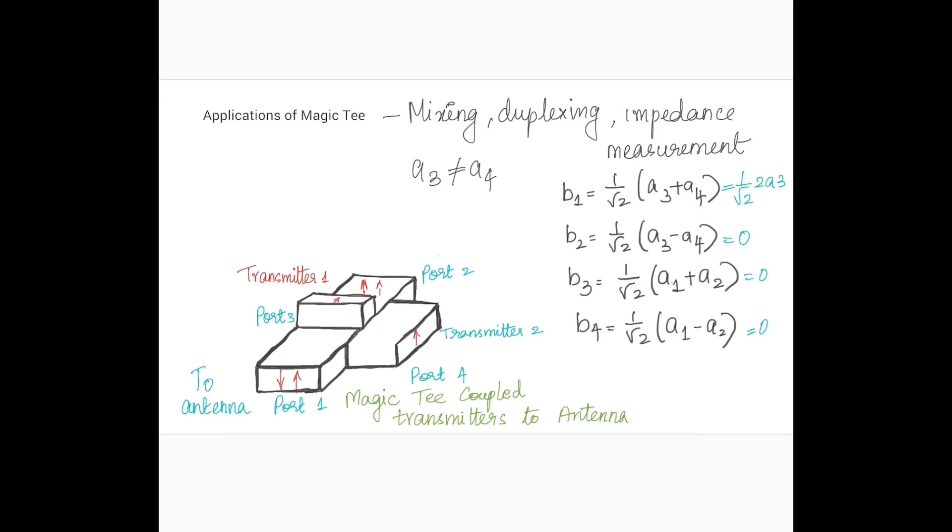So in this case if you consider, you can see that we can write a3 equal to a4 will be not equal to 0, and a1 equal to a2 will be equal to 0.